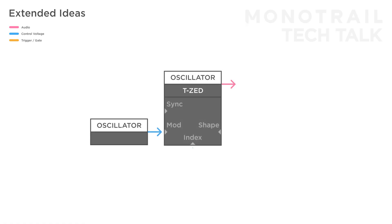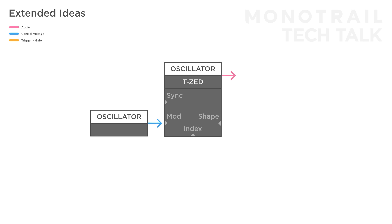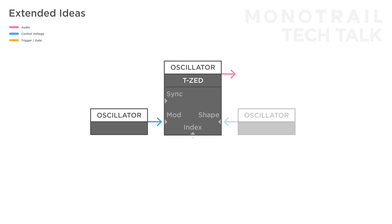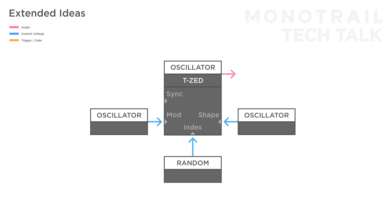Finally, it's worth it to explore modulating with multiple audio rate signals at the same time. For example, use another oscillator to modulate the wave shape, the index or sync input.